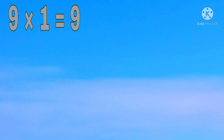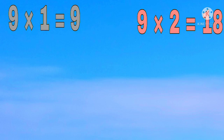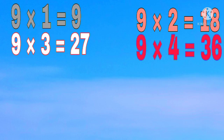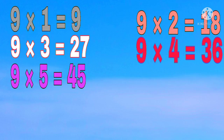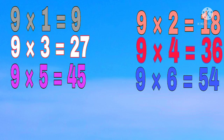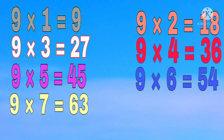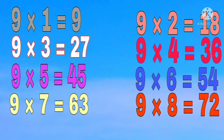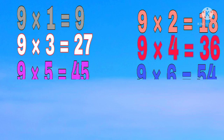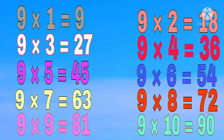Nine times one is 9. Nine times two is 18. Nine times three is 27. Nine times four is 36. Nine times five is 45. Nine times six is 54. Nine times seven is 63. Nine times eight is 72. Nine times nine is 81. Nine times ten is 90.